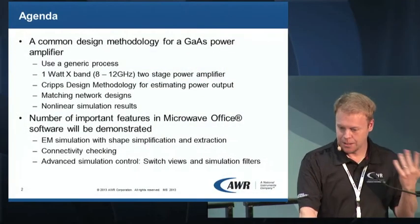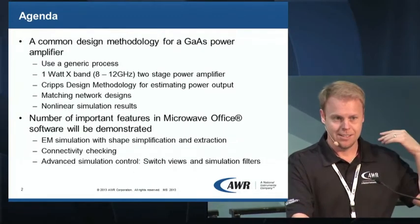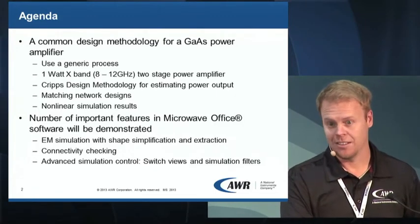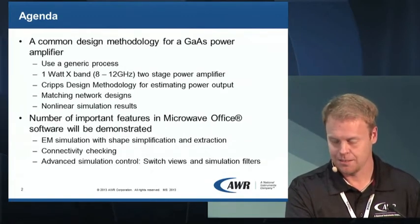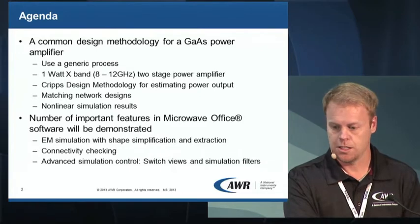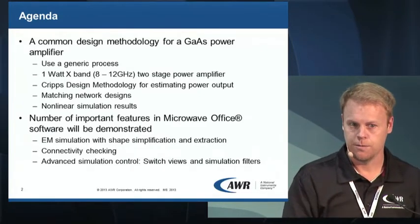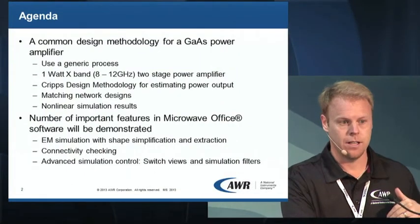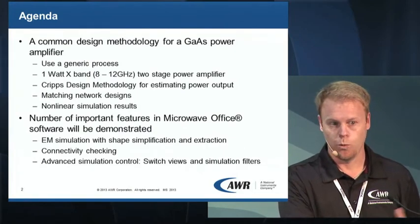Here's a little overview of what I'll be talking about. We're using a generic process — we call it the AWR process. It's an imaginary foundry but it's basically representing a 3-5 GaAs process. As I mentioned, it's a one-watt X-band two-stage power amplifier. We're showing the use of the CRIPS methodology in almost a reverse fashion. We cover matching network designs and nonlinear simulation results, but the purpose of using CRIPS is to avoid using nonlinear simulation during the tweaking process — because running a power sweep, for example, can take some time.